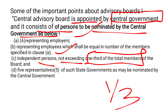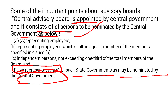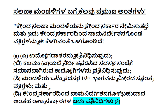Do remember this: independent persons should not be greater than one-third of the total members present in the board. The main provision provided in detail is that there are five representatives of state governments as may be nominated by the central government. The question can be asked in the examination: in the Central Advisory Board, how many members are nominated by the central government who are representing the state government? The answer should be five.